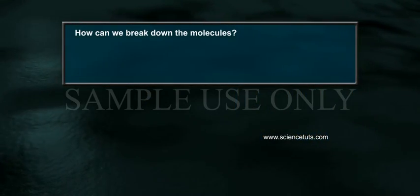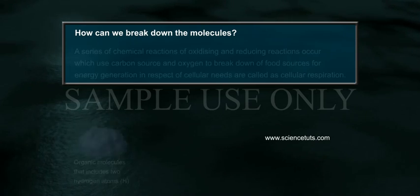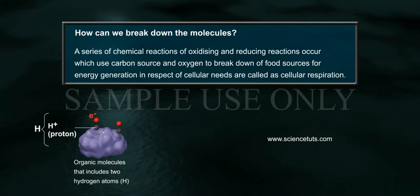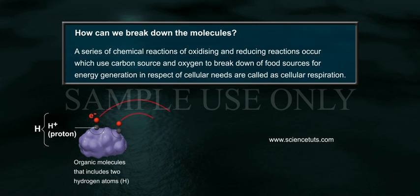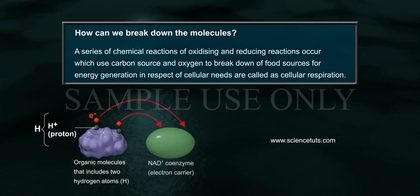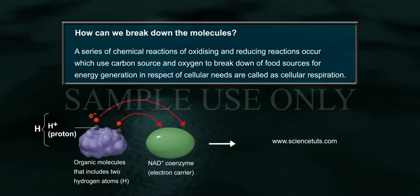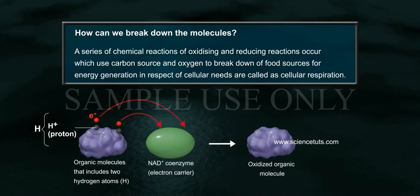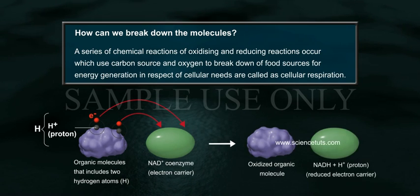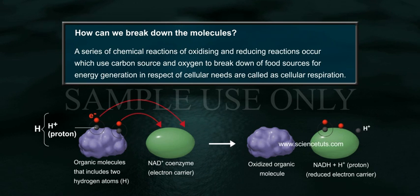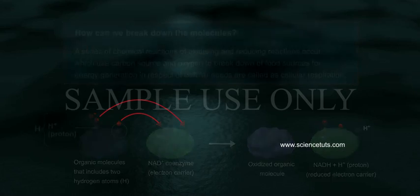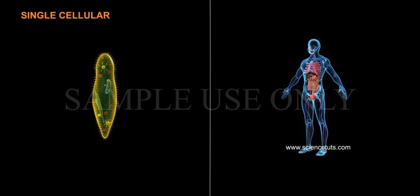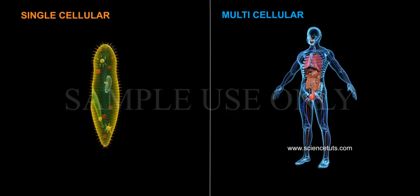How can we break down the molecules? A series of chemical reactions — oxidizing and reducing reactions — occur, which use carbon source and oxygen to break down food sources for energy generation according to cellular needs. These are called cellular respiration. Based on complexity of body design, organisms are classified into single-cellular and multicellular organisms.